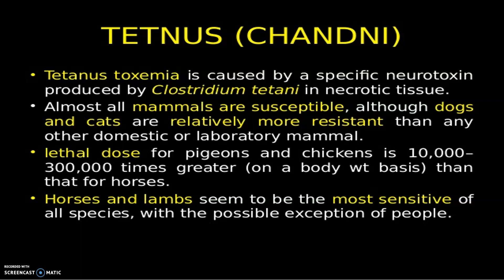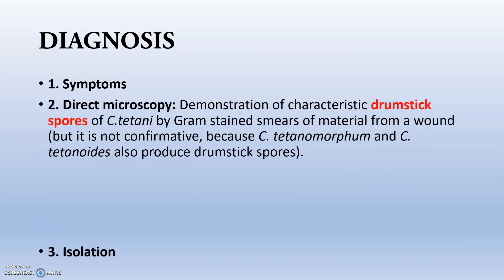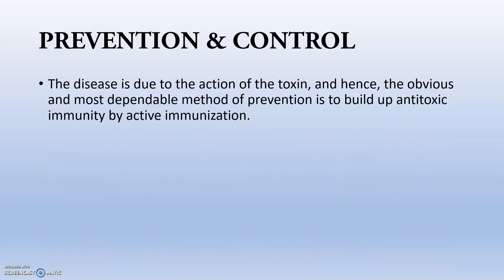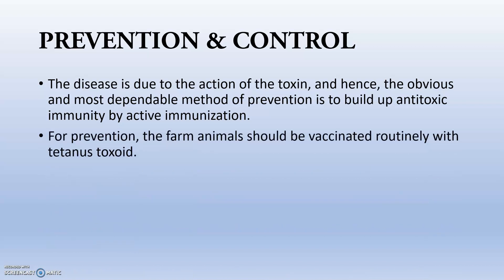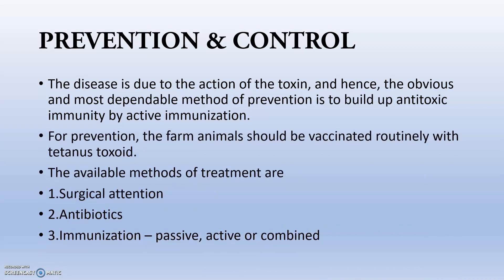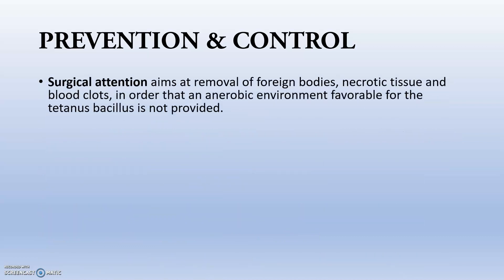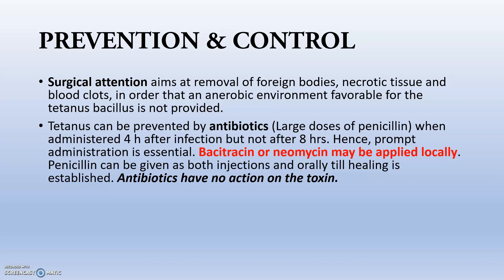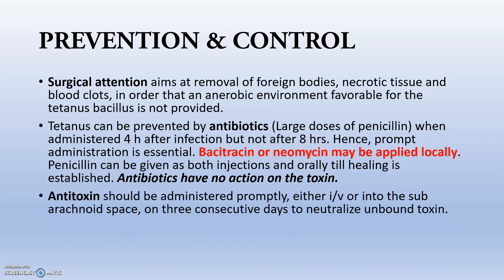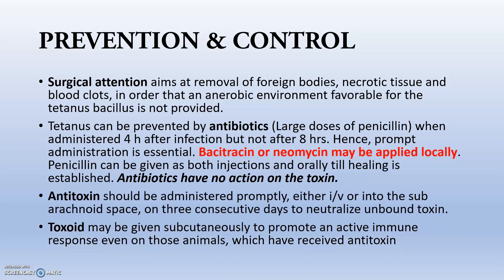Diagnosis is through symptoms, direct microscopy, and isolation. For prevention and control, since the disease is due to toxin action, the most dependable method is building anti-toxic immunity through active immunization — vaccination. Surgical attention aims at removal of foreign bodies. Bacitracin or neomycin may be applied locally; however, antibiotics have no action on the toxin itself. Penicillin can be given by injection and orally once healing is established. Antitoxin is needed, and toxoid may be given subcutaneously to promote active immunization even in animals that have already received antitoxin.